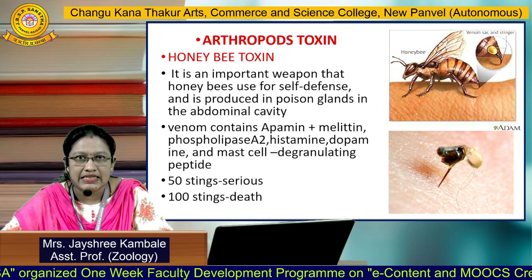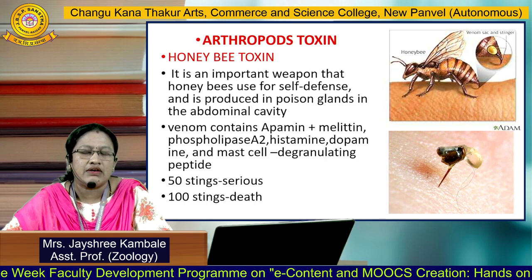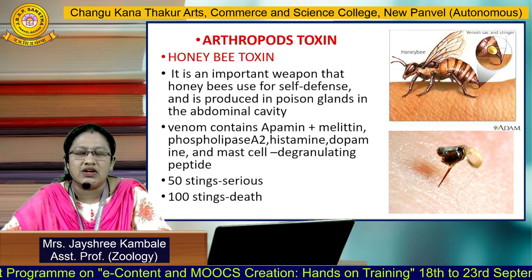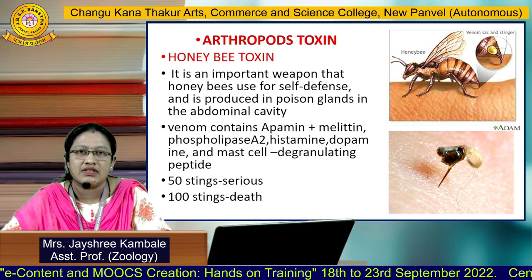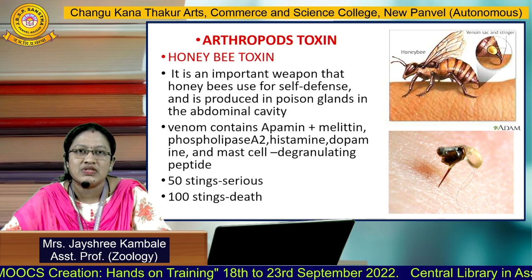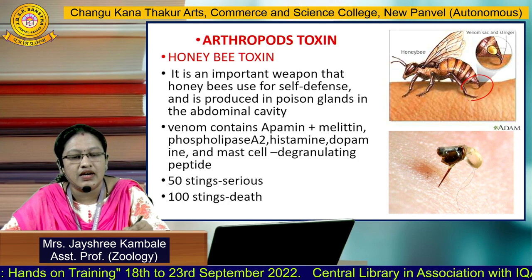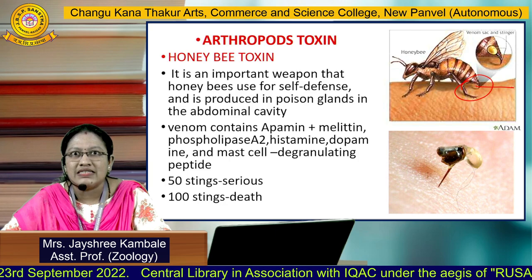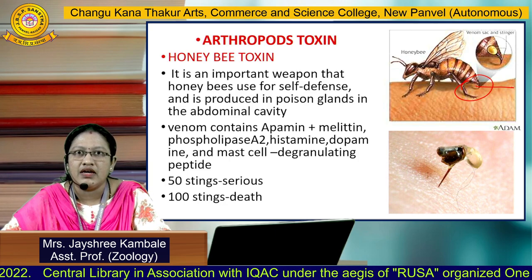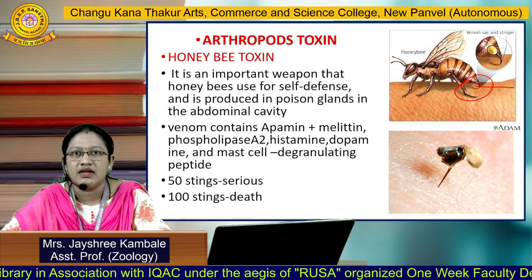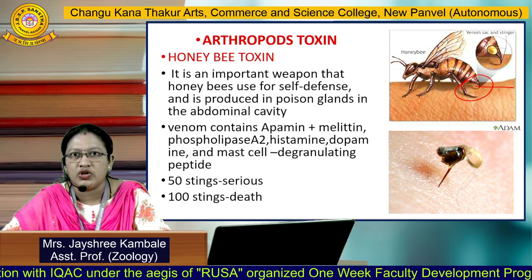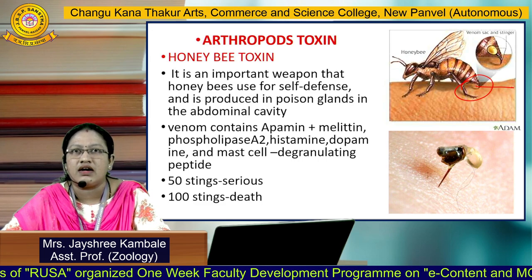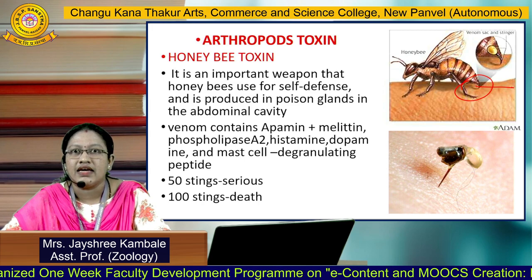The next category is the Arthropod toxin, with the example of the honeybee. The honeybee produces a toxin that is an important weapon used for self-defense, and it is produced in a poisonous gland in the abdominal cavity. The venom of the honeybee mainly contains apamine, melittin, phospholipase A2, histamine, dopamine, and some mast cell degranulating peptides. It is said that 50 stings of a honeybee can be serious, while 100 stings can lead to death.